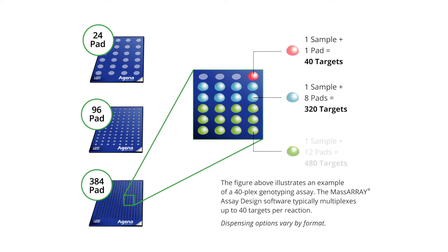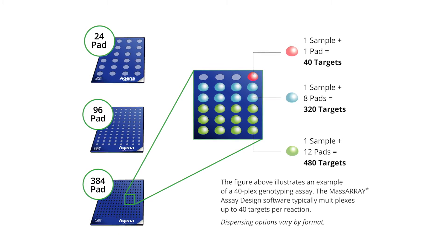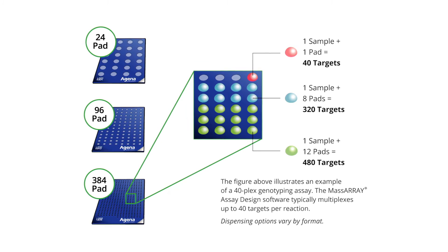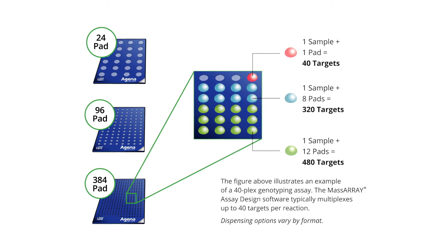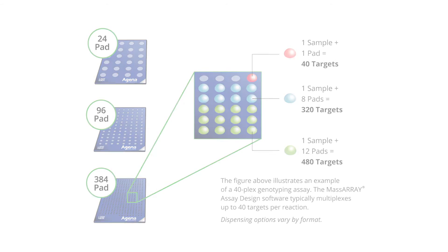Utilizing the Agena Bioscience reagents enables multiplex of up to 40 targets per well, resulting in a low cost per genotype.